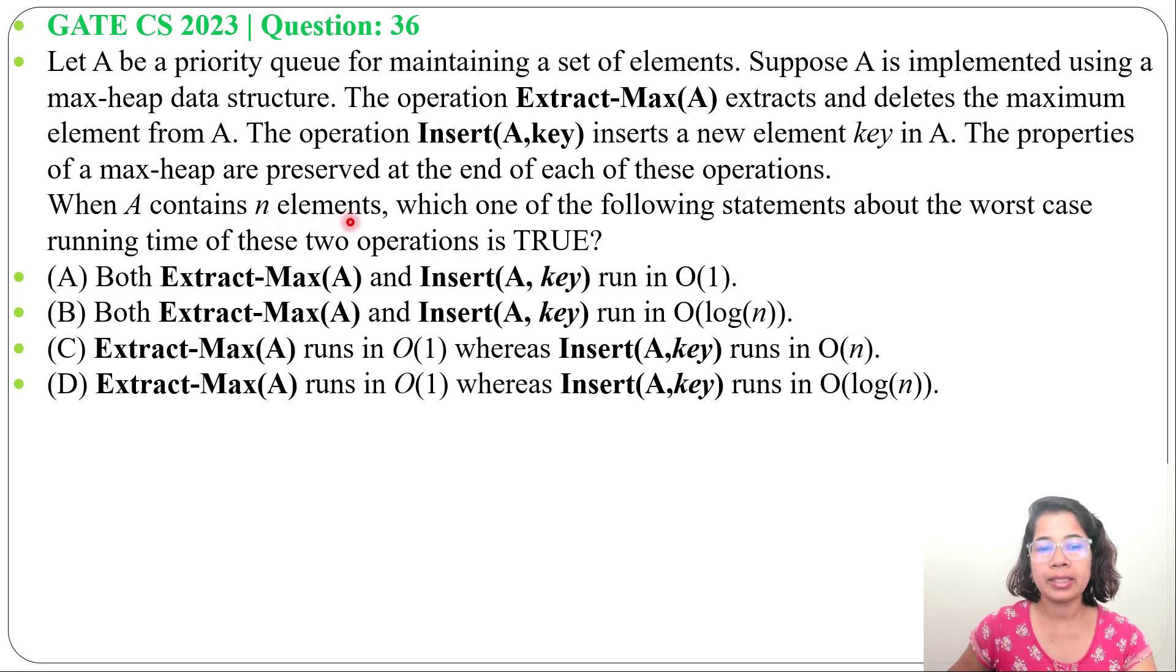When A contains n elements, which of the following statements about the worst-case running time of these two operations is true? Four options are given.